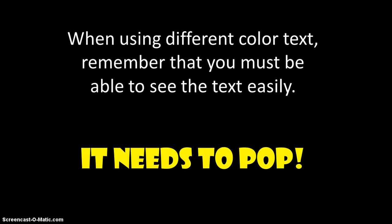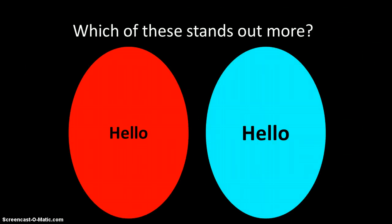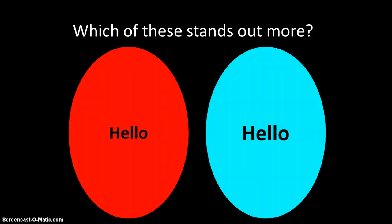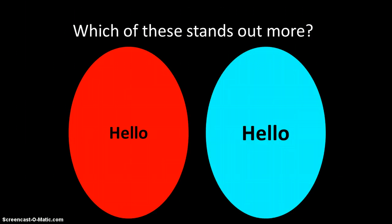When using different colored texts, remember that you must be able to see the text easily — it needs to pop. The best use of that, as you can see here, is to check which text stands out more. Probably the black on the turquoise, because there's a bigger contrast — those two colors are very different. One has a light value and one is obviously the darkest, whereas red is a medium value and black is dark. You want those two to contrast each other really well.